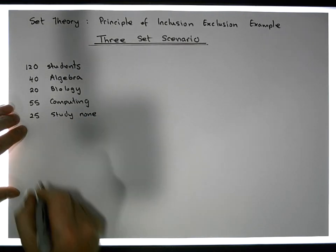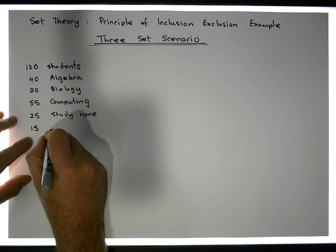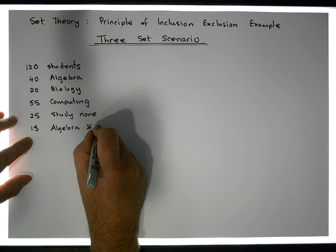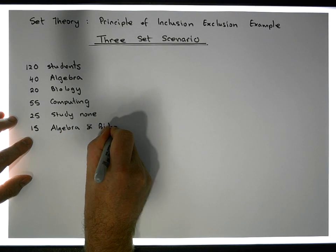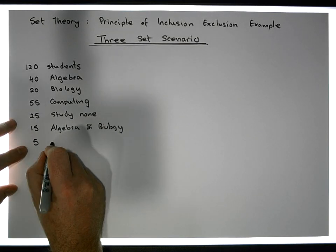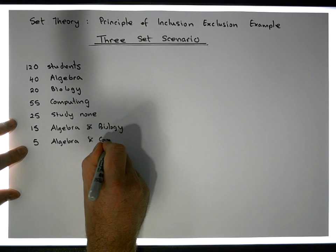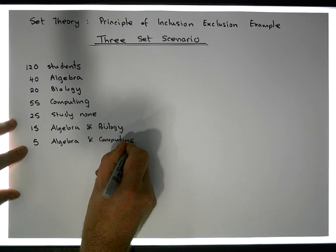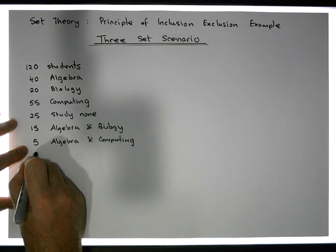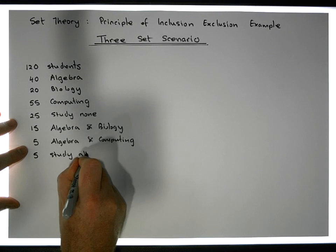Let's say 15 students study algebra and biology, 5 students study algebra and computing, and 5 students study all three.